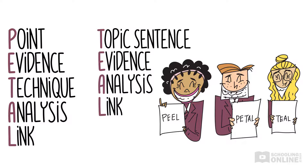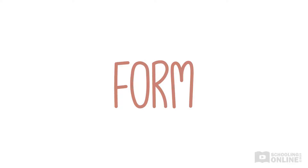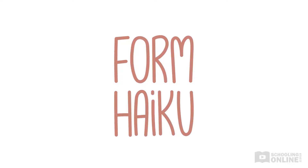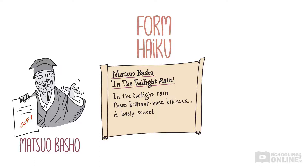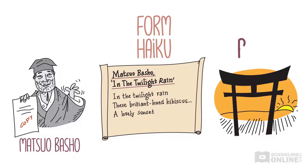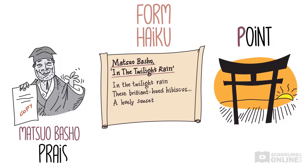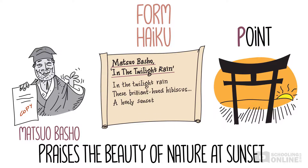Let's have a go using the PEEL method. Let's put together a paragraph about the form of this haiku, which is a translation of a famous Japanese poem written by Matsuo Basho: 'In the twilight rain, these brilliant-hued hibiscus, a lovely sunset.' P stands for Point — what is the main point that you want to explain in this paragraph? For example, you might write that Matsuo's poem praises the beauty of nature at sunset. You've just summarised the big message of the poem.